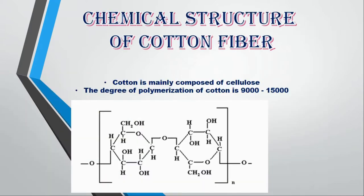Here is the chemical structure of cotton fiber. Cotton is mainly composed of cellulose. The degree of polymerization of cotton is 9 to 15k.